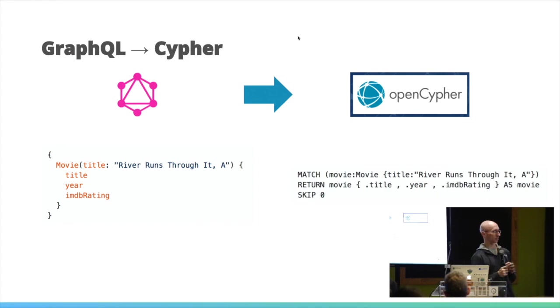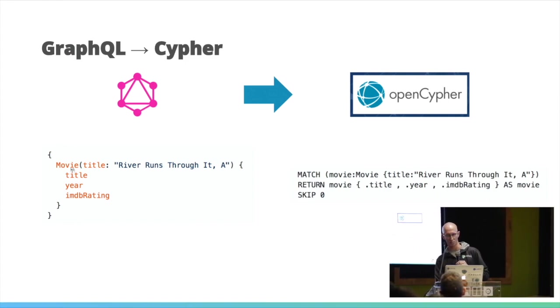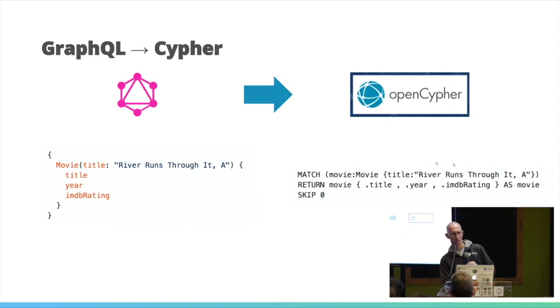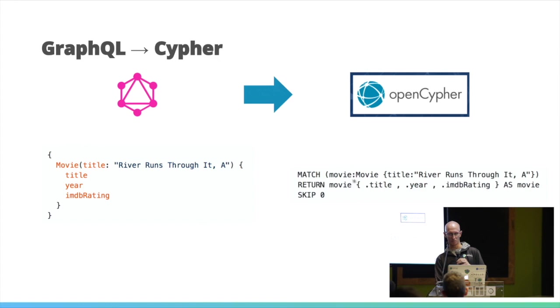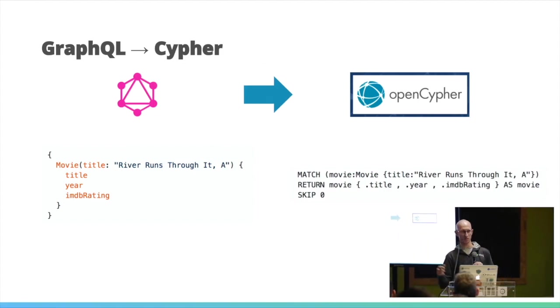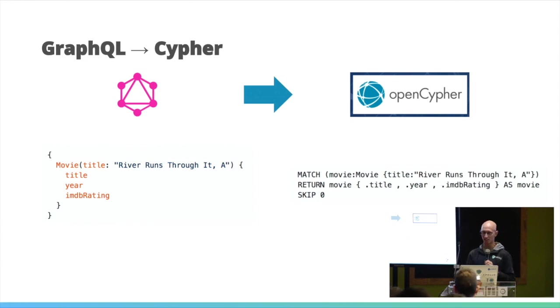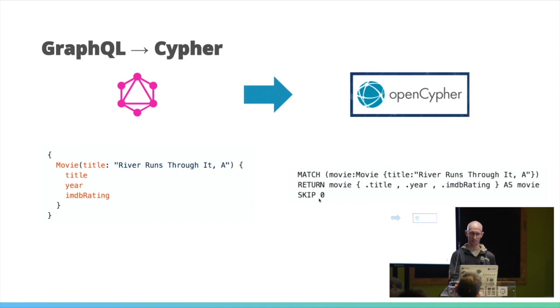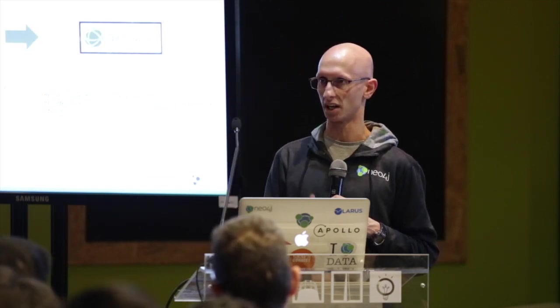The extension takes the GraphQL type and makes it a Neo4j label. The title maps exactly to a property. We introduced a syntax that mirrors GraphQL — return matching movie nodes but only get these fields: title, year, IMDB rating — and skip any others. This syntax was introduced into Cypher even before the GraphQL-to-Cypher mapping, because it's a really nice way of writing queries without getting back information you're not interested in.